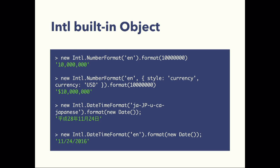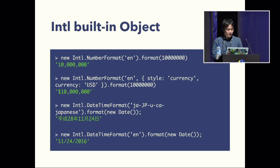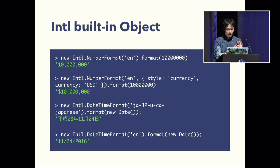Next is the Internationalization API — I call it Intl. Intl is a new built-in object for the Internationalization API. This API exposes format APIs for internationalization, like number formatting, date-time, string comparison, et cetera.